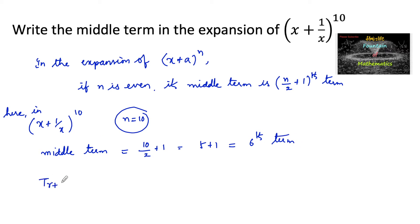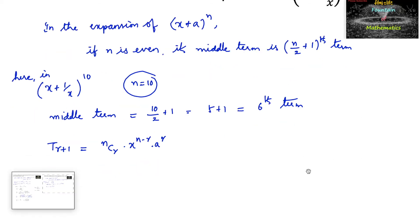Let us consider the general term: t r plus 1 is equal to n c r x to the power of n minus r into a to the power of r, for the expansion of x plus a whole power n.